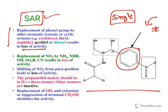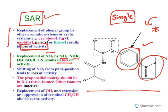Regarding structure-activity relationships: replacement of the phenyl group with other aromatic systems — cyclohexyl, furyl, or heteroaromatic systems — results in loss of activity. Replacement of the nitro group by NH2, NHR, or anything else also results in loss of activity. Shifting the nitro group from the para position to any other position (e.g., meta) also results in loss of activity — it must be only at the para position.